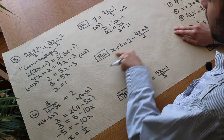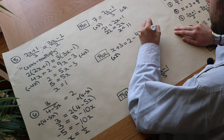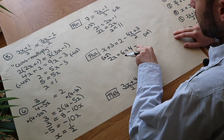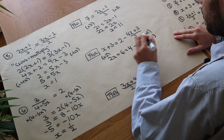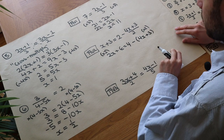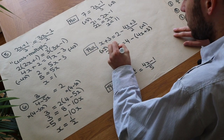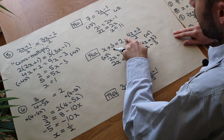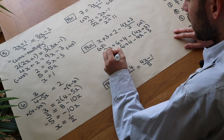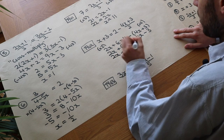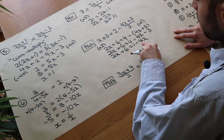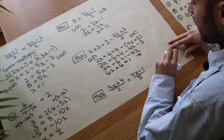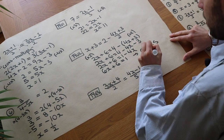Second practice question: x plus 3 equals 2 minus (4x plus 3) over 2. Multiplying everything by 2 first: 2x plus 6 equals 4 minus (4x plus 3). Be very careful here — we're subtracting all of that bracket, so it's minus 4x minus 3, not minus 4x plus 3. Tidying up: 2x plus 6 equals 1 minus 4x. Adding 4x to both sides: 6x plus 6 equals 1. Subtracting 6: 6x equals minus 5, so x equals minus 5 over 6.